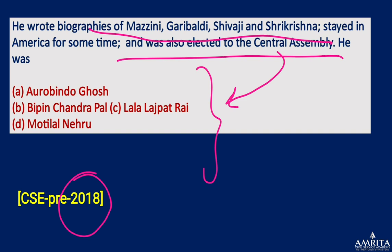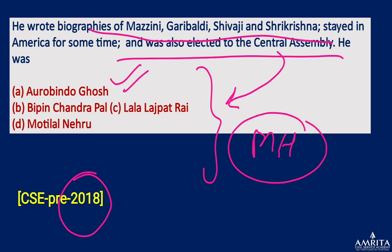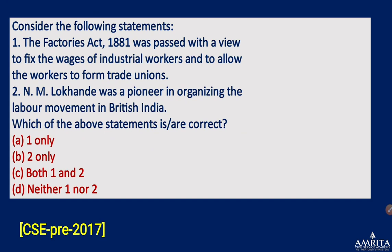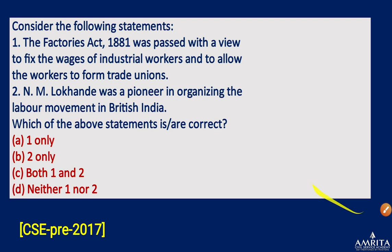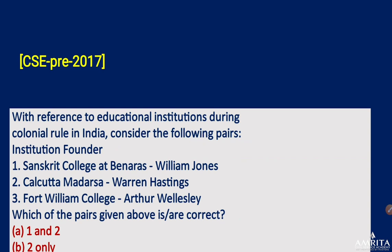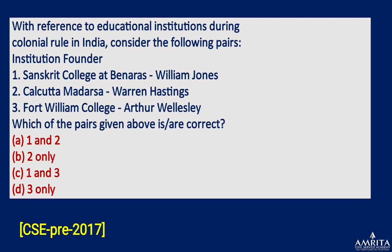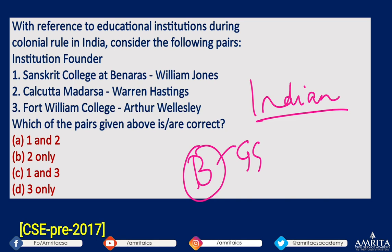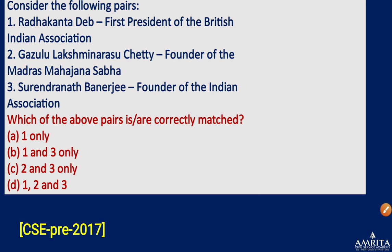As UPSC moves to new years and questions from traditional sources become very common, UPSC will explore areas not covered by traditional sources. For example, questions on Annie Besant and NM Lokhande have been asked — you can find these in optional sources but not in normal traditional sources. Similarly, British individuals are mostly confined to Governor Generals in traditional material.